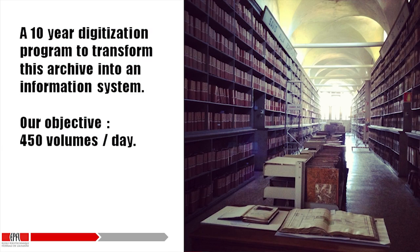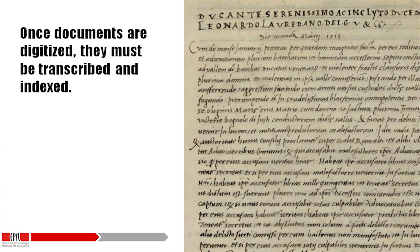We are setting up a 10-year digitization program which has the objective of transforming this immense archive into a giant information system. The objective is 450 books a day that can be digitized. Of course, when you digitize, that's not enough, because these documents — most of them are in Latin, in Tuscan, in Venetian dialect — so you need to transcribe them, translate them in some cases, index them, and this is obviously not easy.